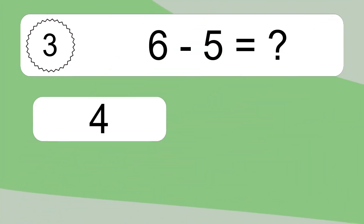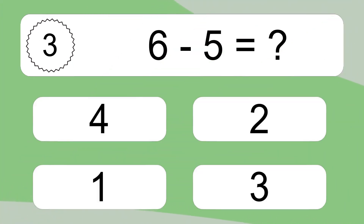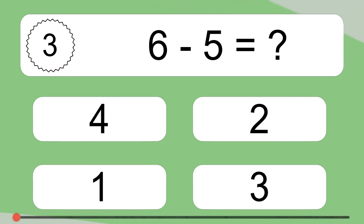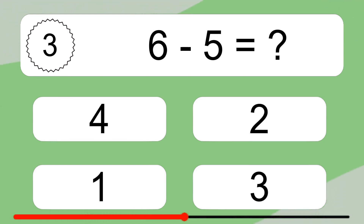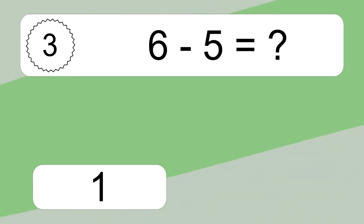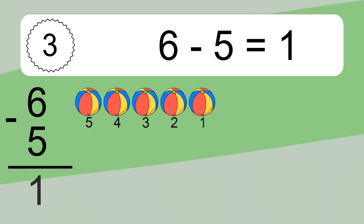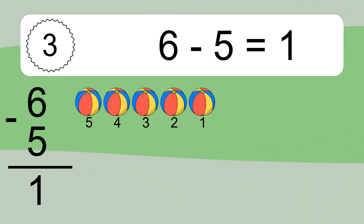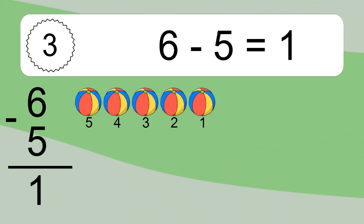6 minus 5 equals what? 6 minus 5 equals 1. Let's count it. 5, 4, 3, 2, 1.